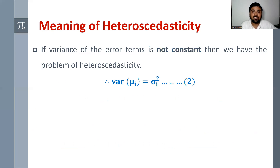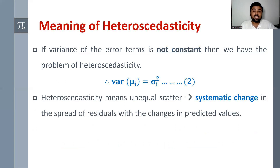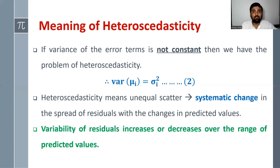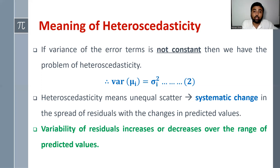Here you can see variance of mu_i is sigma_i squared. In equation one we had sigma squared, but now we have sigma_i squared. So heteroscedasticity means unequal scatter, and therefore we have a systematic change in the spread of residuals with changes in predicted values. The variability of residuals increases or decreases over the range of predicted values, causing the problem of heteroscedasticity. When we talk about heteroscedasticity, we are talking about the behavior of residuals with predicted values.